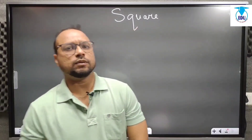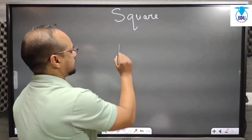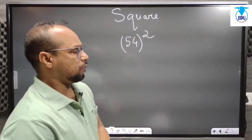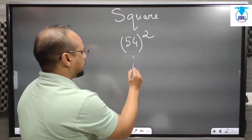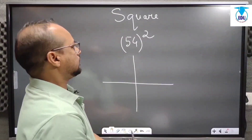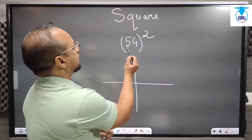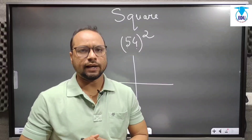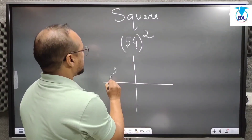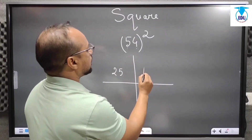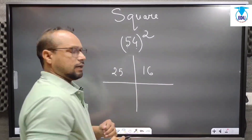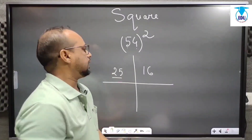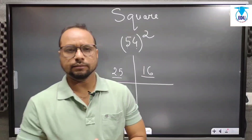Let's take the first example: 54 squared. What we will do is first draw two lines here. You see two numbers are there — 5 and 4. First we will take the square of 5 and 4. The square of 5 is 25, and the square of 4 is 16. Always remember, here always two digits will come, and here also always two digits will come.